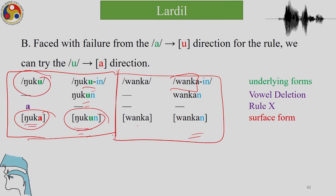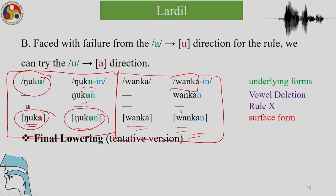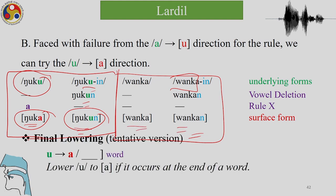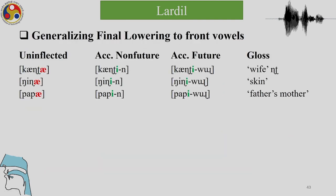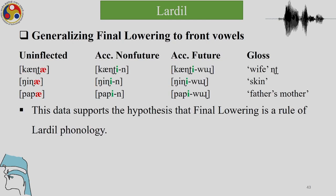In one form we have 'ngukun' whereas 'wanka' and 'wankan' remain the same. We can say that Lardil has something called final lowering: U changes to A in the final word position, as seen in the word 'mukha' — U lowers to A. So the rule is: lower U to A if it occurs at the end of a word. We need more data to see what is happening in Lardil, and with the data we have seen so far we will not yet be able to say for certain if there is final lowering.